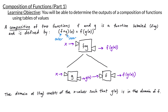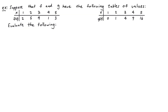Now that we have an idea of what a composition of functions is, let's look at an example. We're given tables of values for two functions f and g — the table for f on the left and the table for g on the right. In example a we want to evaluate f composed with g of 2, meaning we want to find the output when we input 2. By definition the output is f of g of 2. When we have an expression like this we work from the inside out: start by computing g of 2, then take that number and plug it into f.